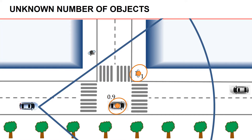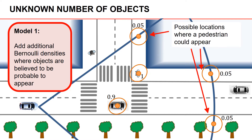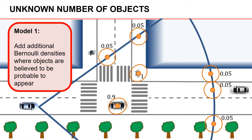We also have to deal with objects that appear, and to do this there are two types of approaches. The first alternative is to add additional Bernoulli densities where objects are believed to be probable to appear. For example, we might expect pedestrians to appear on the sidewalks near the edge of the field of view, and since we are not certain a pedestrian will actually appear, we assign a low probability of existence — set to 0.05 in this example. New vehicles might perhaps appear in the opposing lane or on the road to the left of the autonomous vehicle, giving us a new set of Bernoullis.